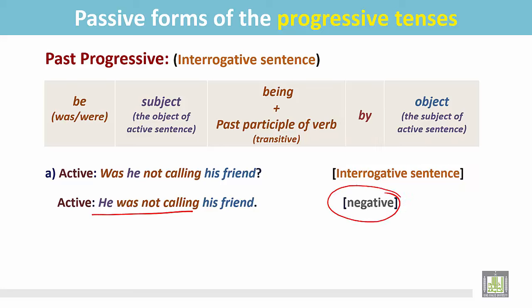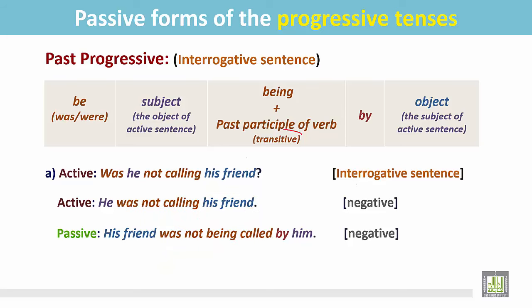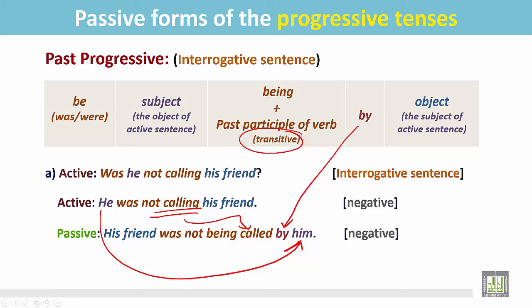He was not calling — calling whom? We find the object of this verb: his friend. In the passive form, the object becomes the subject. According to the number and person of the subject, use a be verb. It is a singular noun, so use was. To make it negative, add not. Then for the progressive tense, use being. The past participle form of this transitive verb is called. Then the preposition by. And the subject of the active sentence becomes the object in the passive.